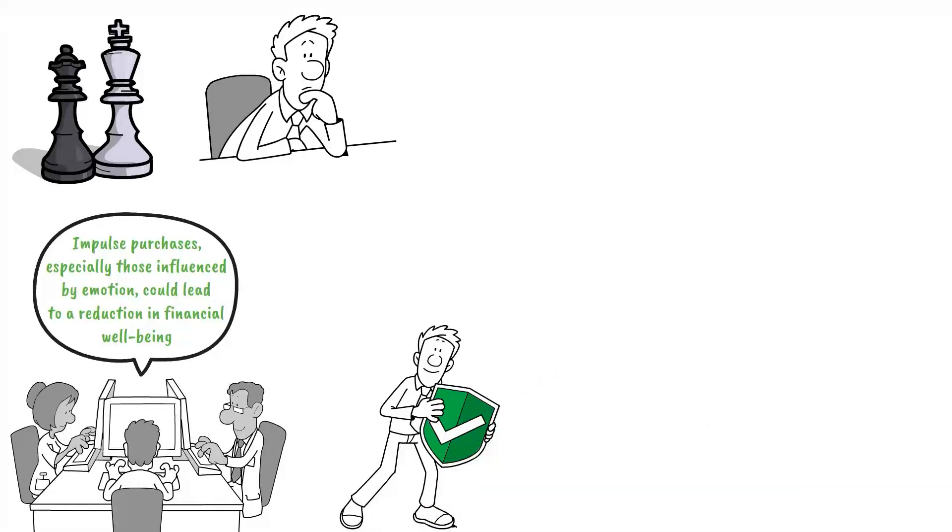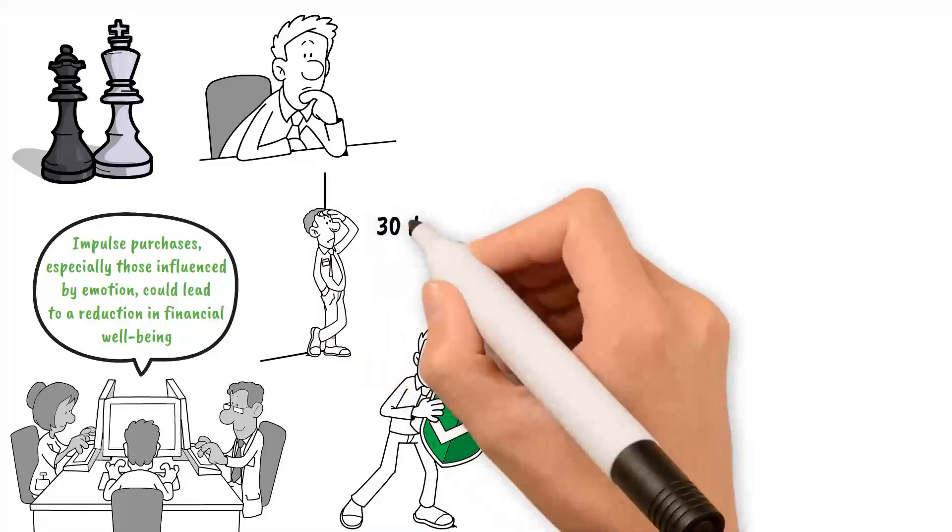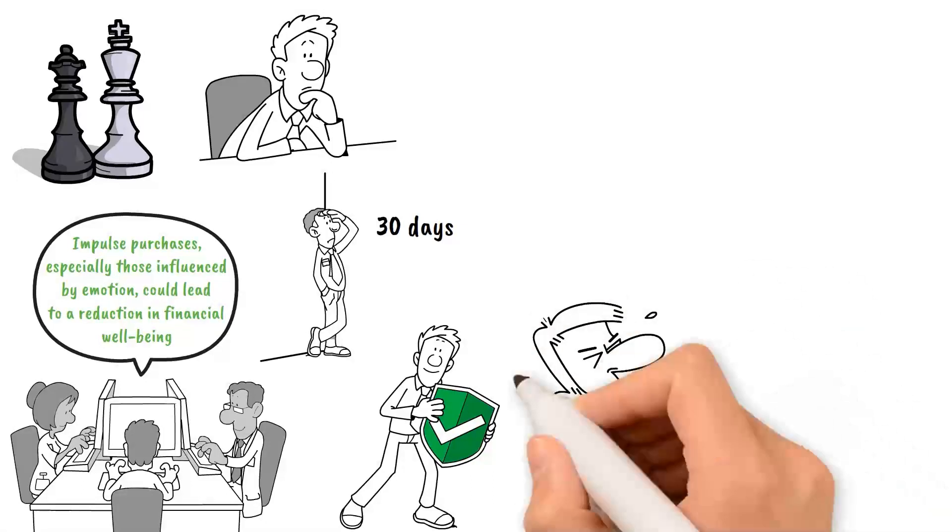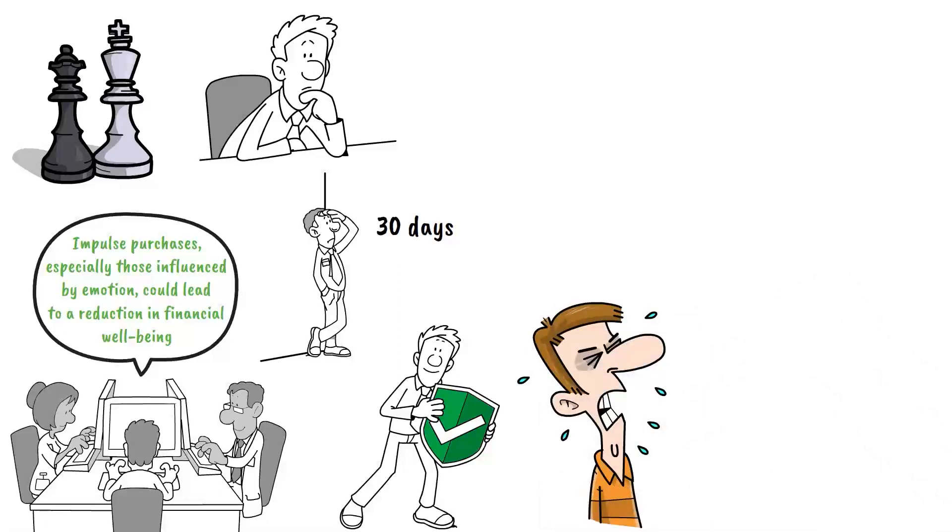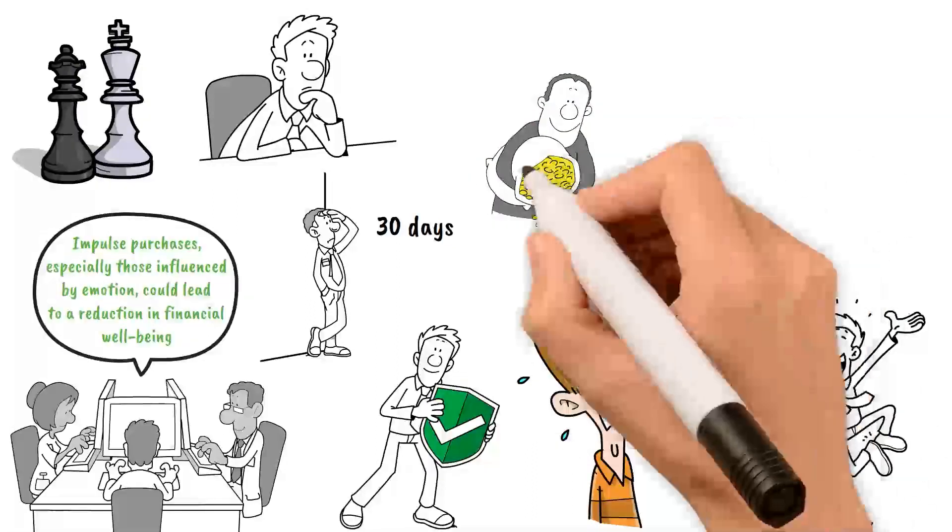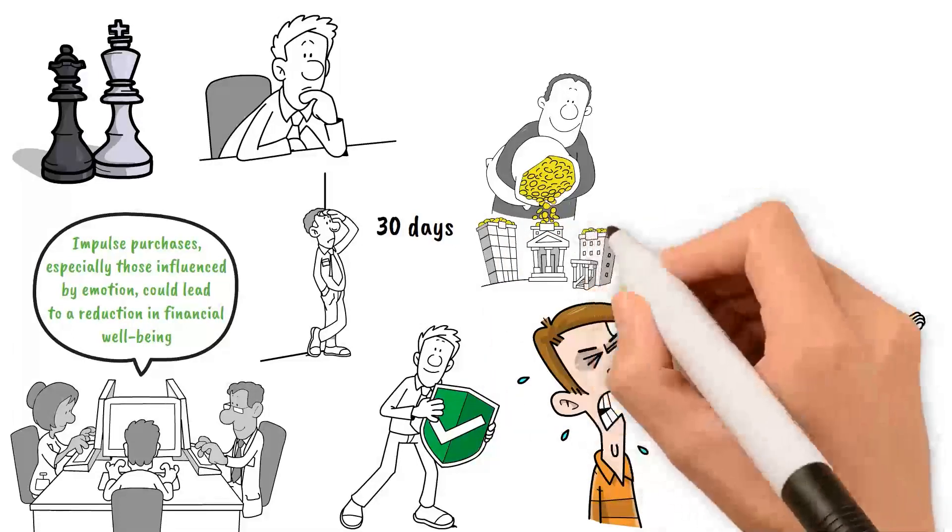To employ the 30-day rule, when you feel the urge to buy something, instead of purchasing immediately, you wait for 30 days. If after the 30 days you still feel the same urgency to purchase the item, then it may be worth considering. However, you might find that the desire to buy the item diminishes over time. By practicing this rule, we can create a financial buffer, save more effectively, and only invest in items that truly add value to our lives. Imagine the potential savings if we waited 30 days before making every non-essential purchase.